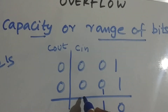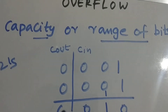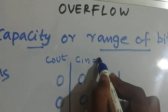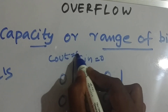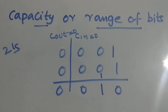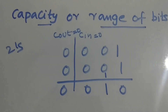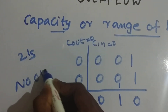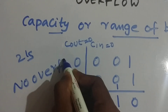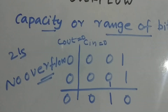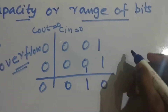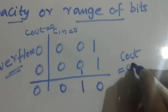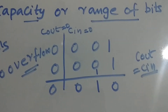Adding the first example: 1, 1, 0 — carry will be 1, then 1, then 0 and 0, so there's no carry. C_in equals 0 and C_out equals 0. When both C_in and C_out are equal, there is no overflow.